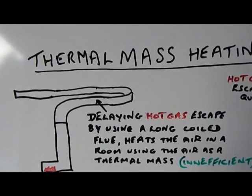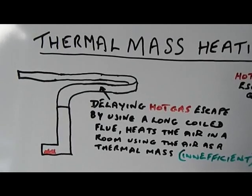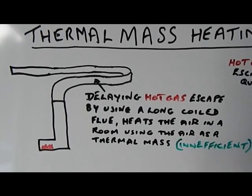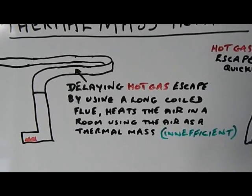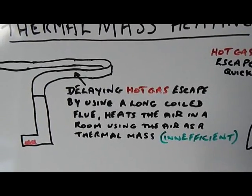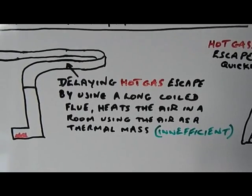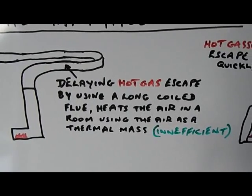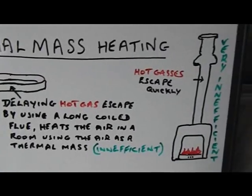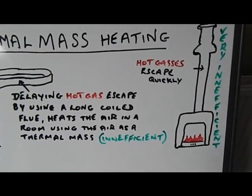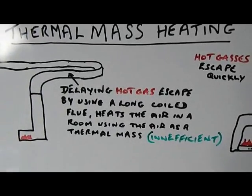Then the heat in the tube, the heat that's being given off by the exhaust gases, will heat the tube which heats the air. And as it's written here, it says, delaying hot gas escape by using a long coil flue, heats the air in a room using the air as a thermal mass. Now, that's more efficient than the original, but it's still not very efficient.